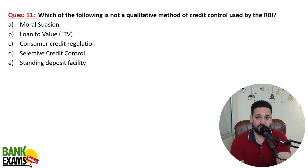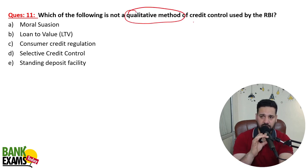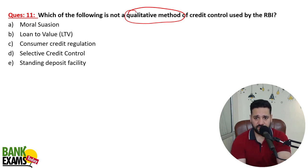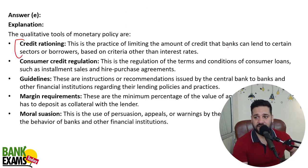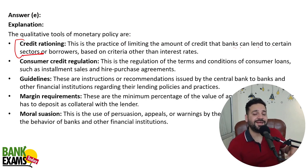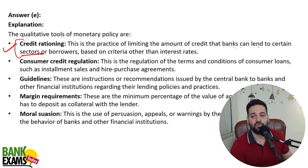Question number one: which of the following is NOT a qualitative method of credit control — qualitative, not quantitative. First, credit rationing: it is the practice of limiting the amount of credit that a bank can lend to a certain sector. For example, RBI asking banks to give less loans to the real estate sector or the bullion sector — that is credit rationing.